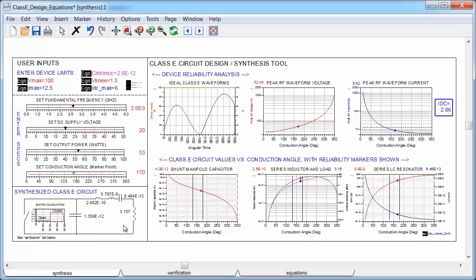On the right hand side, it generates the class E voltage and current waveforms across the switch and analyzes these against reliability constraints. The tool essentially looks at all possible conduction angles and returns only waveforms that meet these requirements, and then notes where these conduction angles occur.